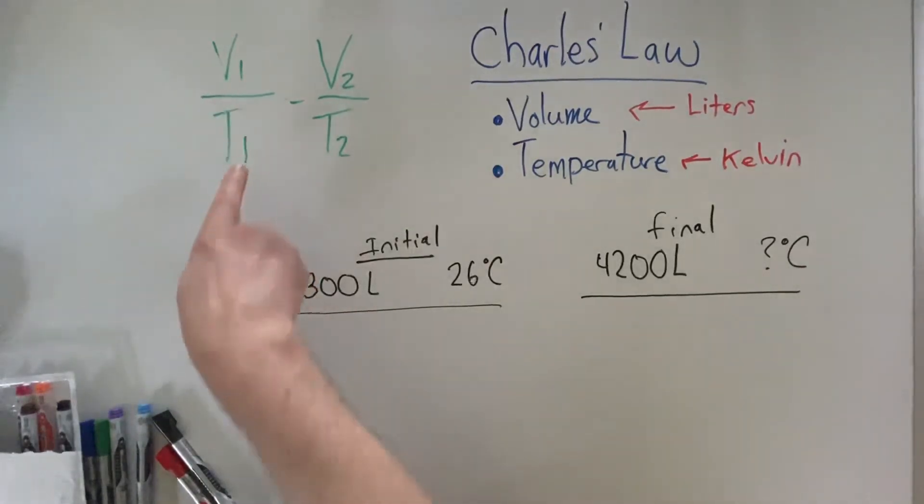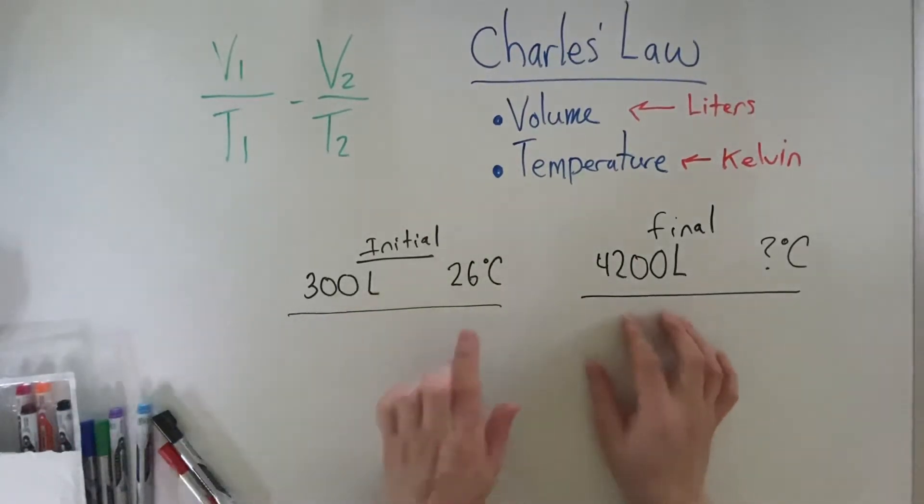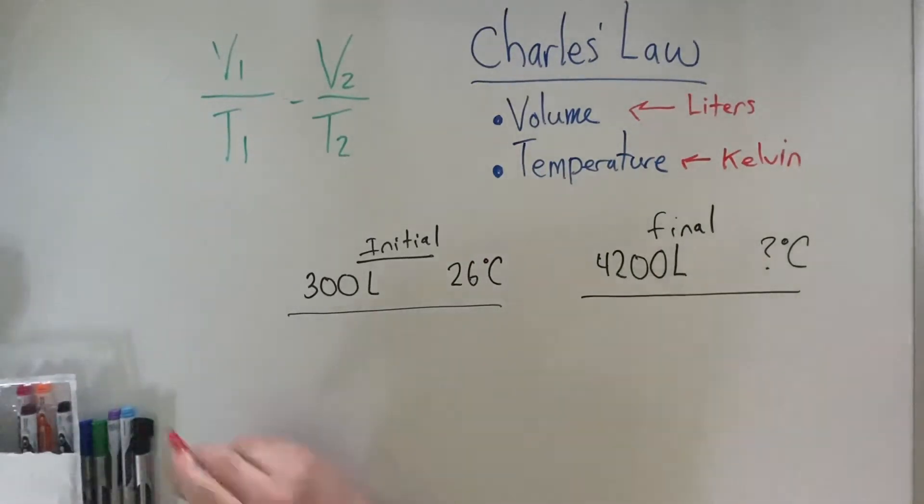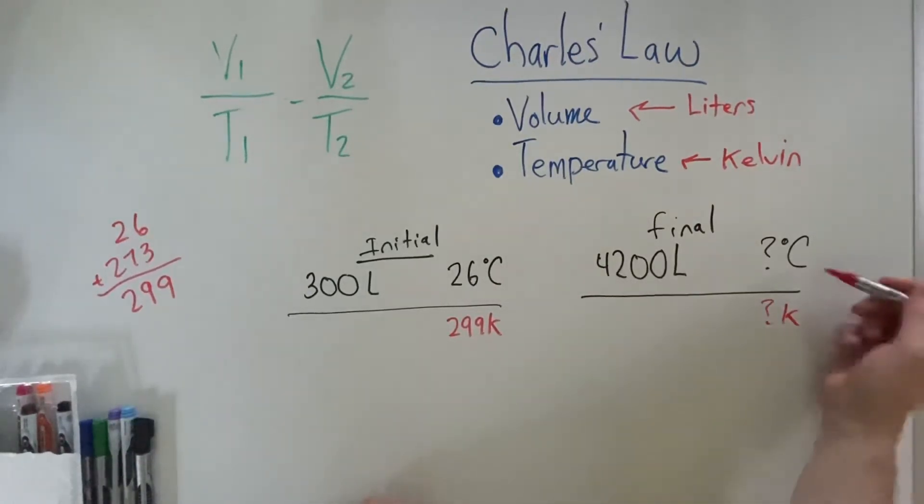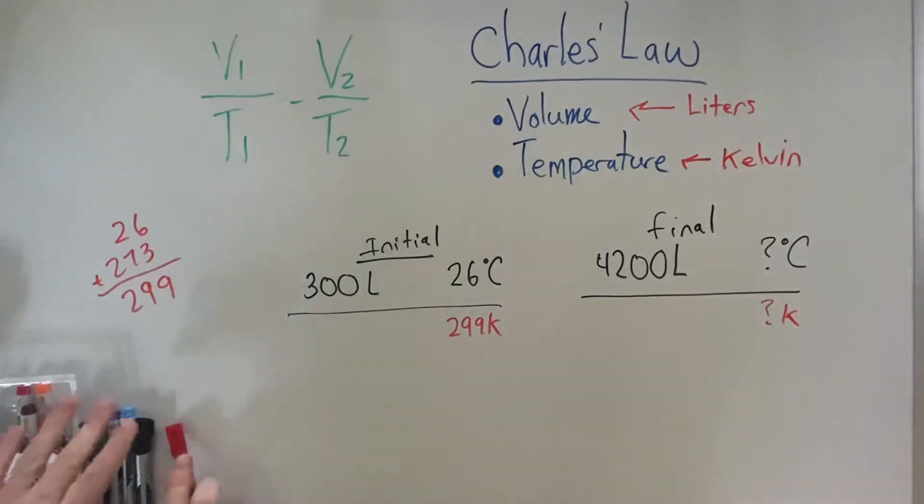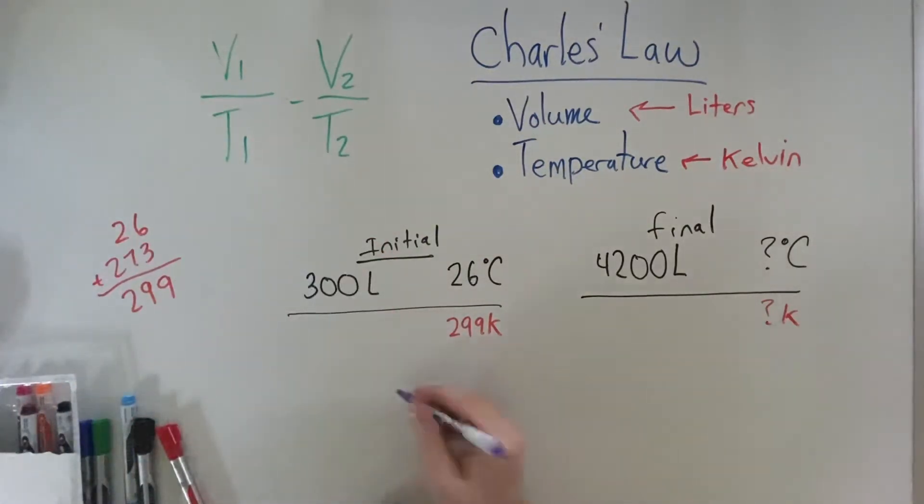First off, you want to make sure your volume's in liters, and it is. This is not in Kelvin, so we're going to have to convert that. We'll take our 26 and we're going to add 273 to it. We get 299 Kelvin. And this here is something in Kelvin, but we will have to convert it back to Celsius when we're done. So we go ahead and we're going to plug everything in. My V1 is 300 liters. My T1 is 299 Kelvin. My V2 is 4,200 liters. And my T2 is, I have no idea, so I'm going to put an X here.